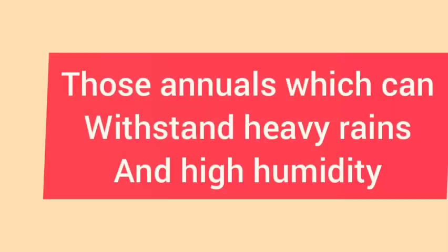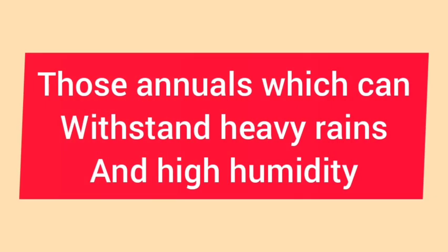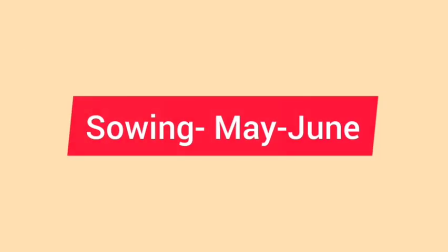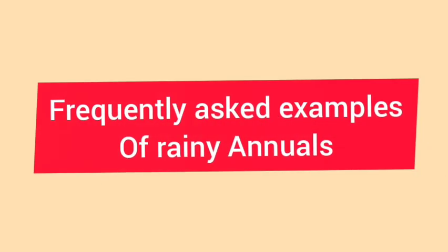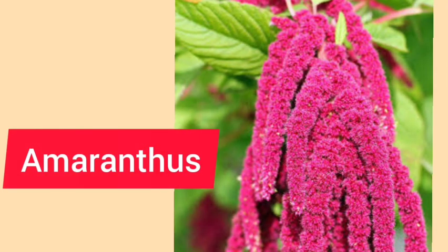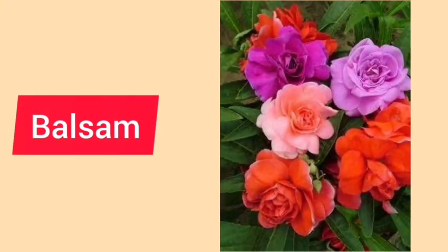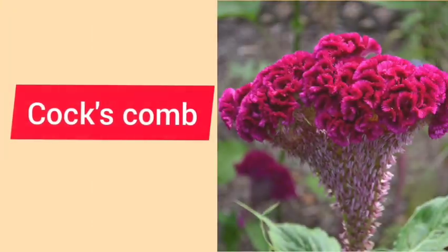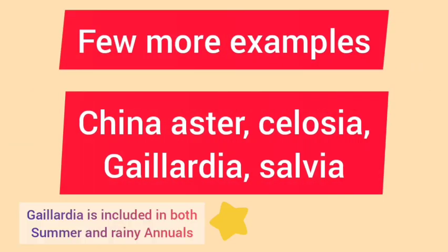Rainy annuals are those annuals which can withstand heavy rains and high humidity coupled with temperature. They are sown in May to June. Examples that are frequently asked are Amaranthus, Balsam, and Cockscomb. A few more necessary examples are Aster, Celosia, Gaillardia, and Salvia.